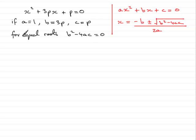So, for equal roots, b squared minus 4ac should equal 0. So, if we substitute our values into here, we've got 3p all squared minus 4 times a, which is 1, times c, which is p, must equal 0.